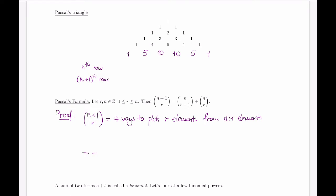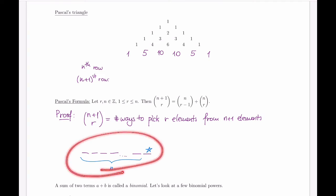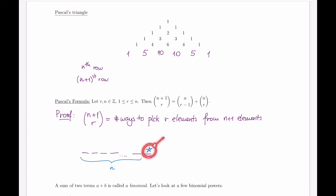We think of the n+1 elements this way: the first n elements as a group, and then we separate the last element from the pack. If I'm picking r elements from n+1, my selection will either include this special element or it will not. Those are the two cases to consider.